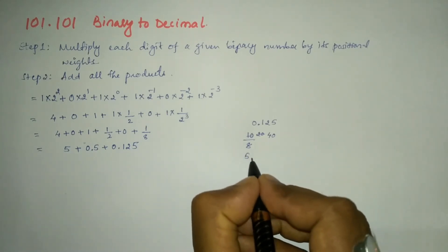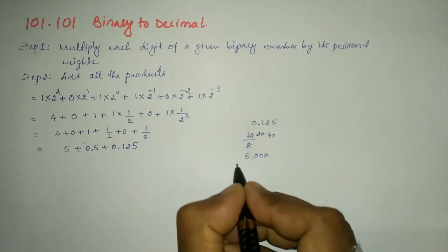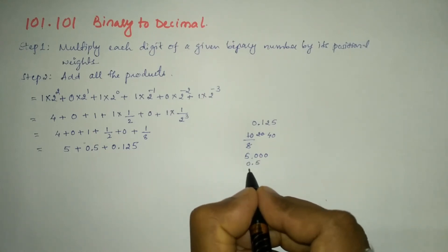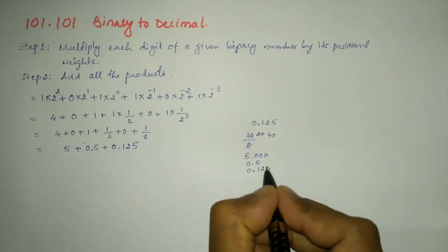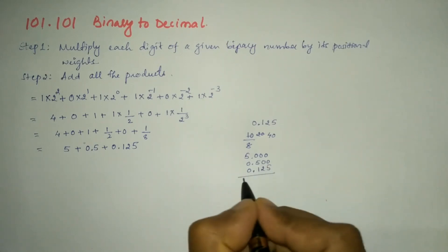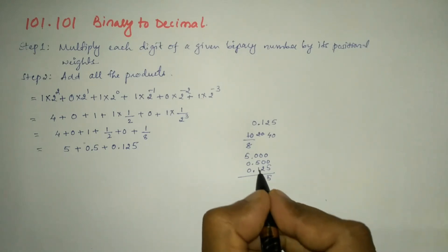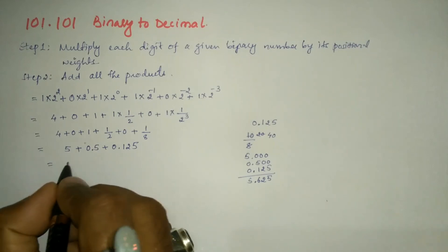So in place of 1 divided by 8, we can write 0.125. Now let us add all these numbers: 5.000 + 0.5 + 0.125. I'll get 5 + 5 plus 1 is 6, so I'm going to get 5.625.